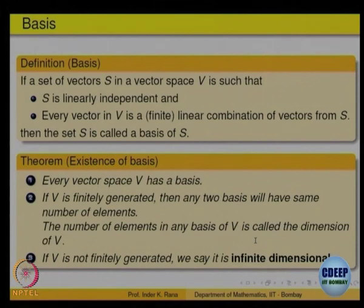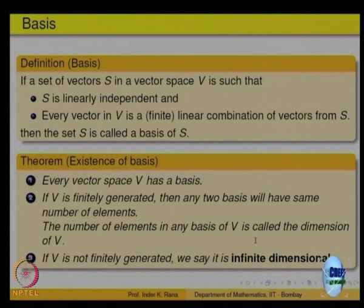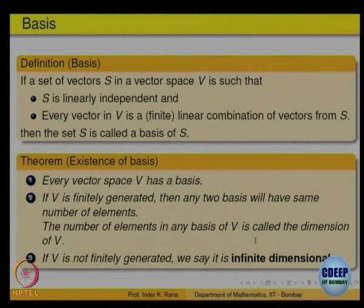But in vector spaces like R(x) which are not finitely generated, how do you show a basis exists? The vector space is not given, the basis is not given — how do you show existence when you don't know the addition or scalar multiplication? There is a general theorem where the abstraction comes in: whatever the vector space, whatever the addition or scalar multiplication, you can always find a basis. The idea for finitely generated is the same.